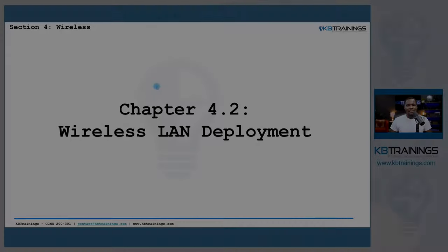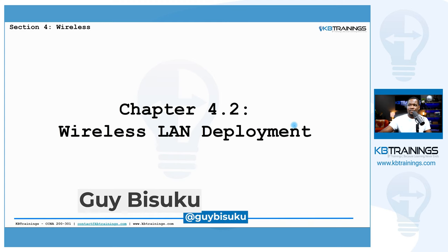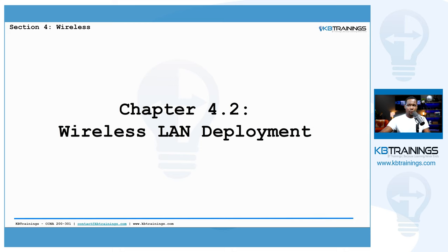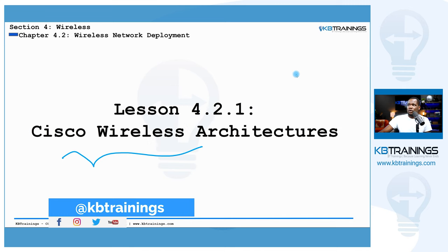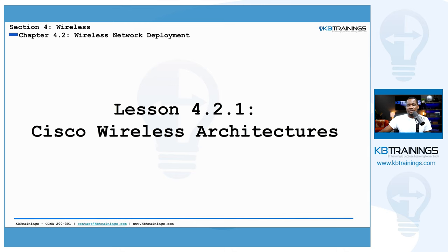Hey, what's up guys, this is Guy here with KB Trainings. Welcome to chapter 4.2. This is a new chapter in our CCNA 200-301 course and we are going to talk about wireless LAN deployment. In the first lesson of this chapter we're going to cover the different Cisco wireless architectures, and this is lesson number 4.2.1.